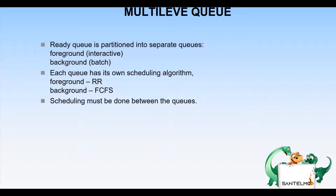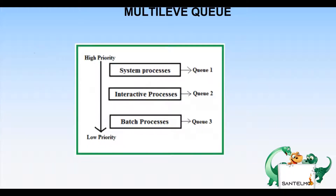Multi-level queuing scheduling is used for this kind of situation. The ready queue is divided into separate queues for each class of processes. For example, with three types: system processes, interactive processes, and batch processes — system processes get the highest priority (Q1), interactive processes get the next priority (Q2), and batch processes get the lowest priority (Q3).